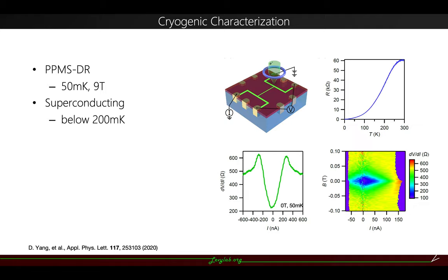So after that, we look at the cryogenic characterization to the structure we designed. And basically, it's a four-terminal nanowire. And we cooled it down to 50 millikelvin using our PPMS dilution refrigerator. The structure shows superconducting behavior below 200 millikelvin, which is consistent with the LAO-STO structure. And here is a plot for its superconductivity.